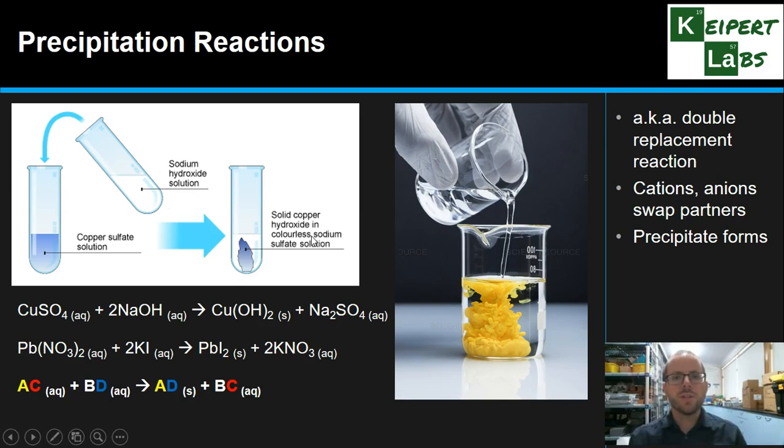We've got two chemical reactions here that are represented with the chemical equation. We've got copper sulphate and sodium hydroxide combining together to make a copper hydroxide precipitate in a colourless sodium sulphate solution. So the sulphate and the hydroxide have swapped places, or you could look at it and say that the copper and the sodium have swapped places. Either way, we've got two new combinations.